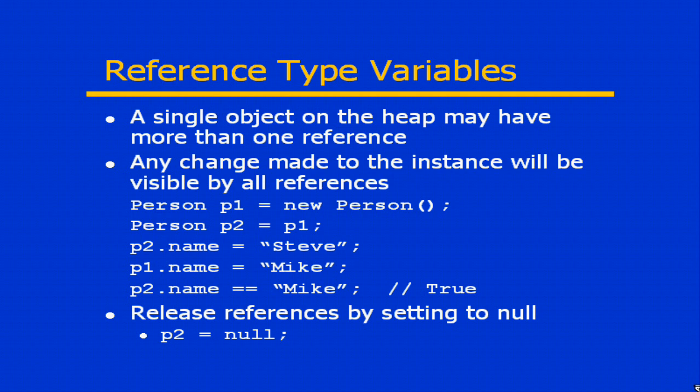Anything that you do through any of these references is actually going to be visible through the other references. This can happen quite frequently, especially when you start passing reference variable types as parameters in methods — you may have two physical references pointing to the same object, and what you do inside your method affects how you view it outside the method. One important thing to remember: when you're finished with your references, you need to destroy them. Setting P2 equal to null disassociates P2 from the actual object — P2 is no longer a live reference. P1 may still be active and the object may still be loaded, but as soon as the P1 reference is discontinued as well, the object no longer has any references pointing to it and would be available for garbage collection.